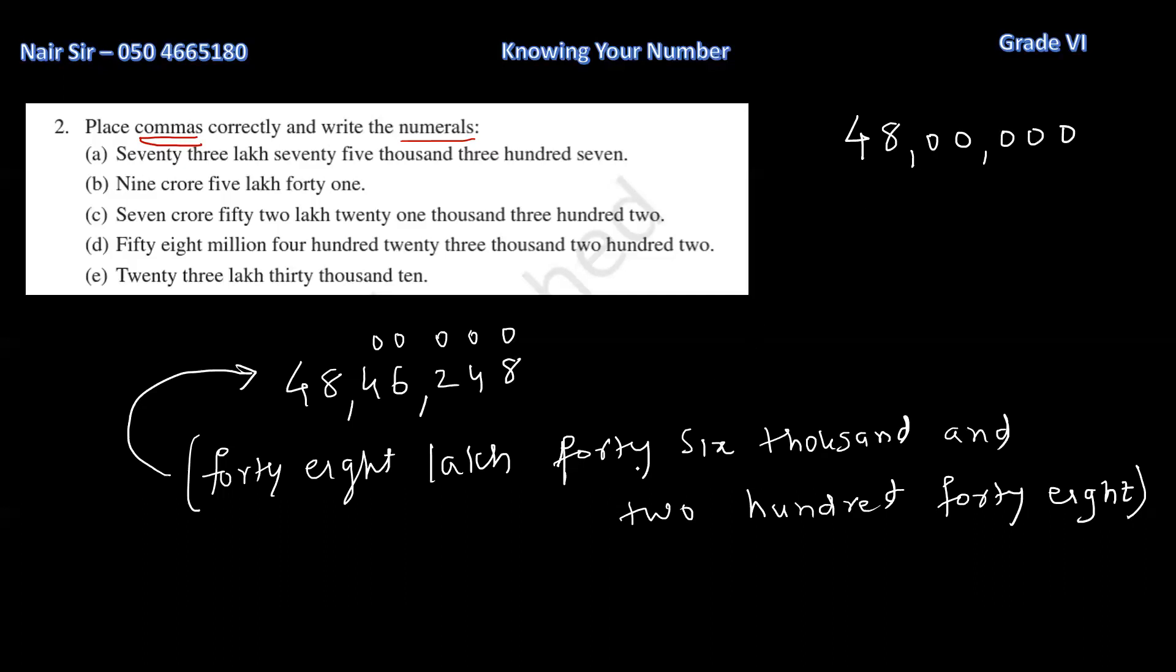Now, can I write 46,000? In 46,000, how many zeros are there? Three zeros. So, I will, now I will, what I am going to do? I am going to write three zeros. I am preparing to be close. And 46. Okay?